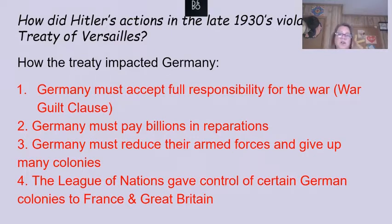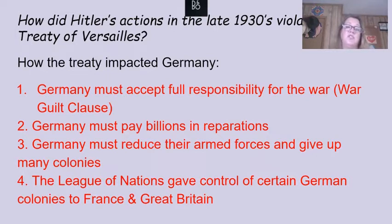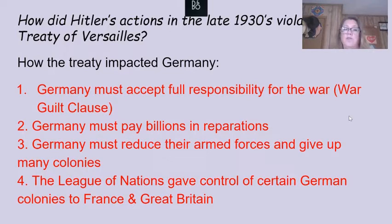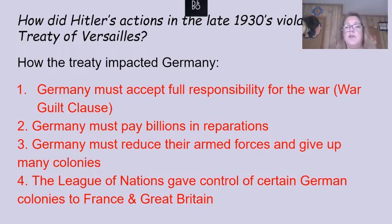The war guilt clause forced Germany to accept full responsibility for the war. Germany had to pay billions in reparations, reduce their armed forces, and give up many of their colonies. The League of Nations gave control of certain German colonies to France and Great Britain. Those were the four main consequences from the Treaty of Versailles, which effectively ended World War One.